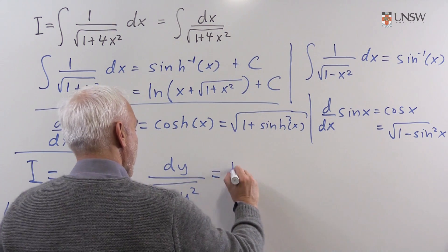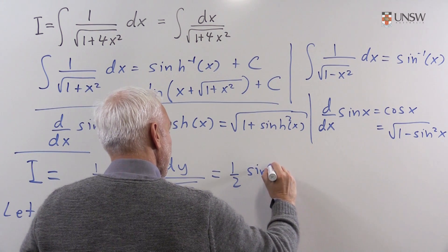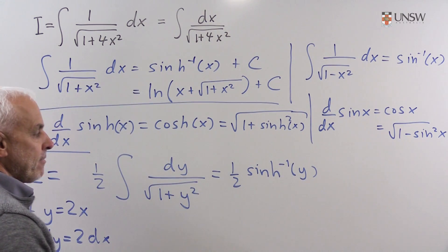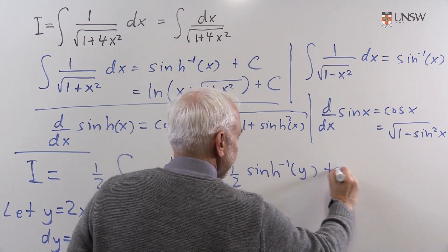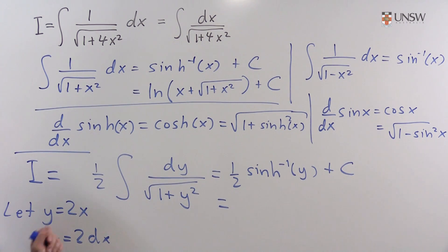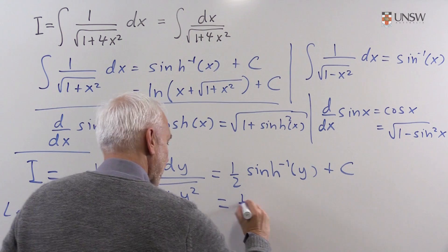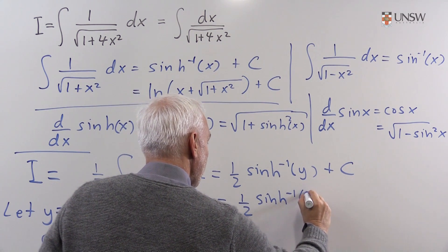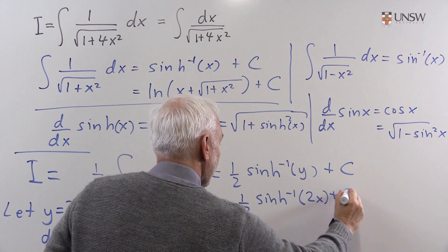And now this is just one half of sinh inverse of y plus a constant. And now coming back to our substitution, we can replace everything in terms of x to get one half sinh inverse of 2x plus a constant.